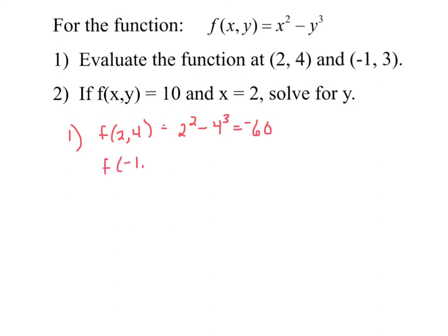f of negative 1, 3 is equal to negative 1 squared minus 3 cubed. So, 1 minus 27 is negative 26. So, nothing shocking about how to evaluate these points.